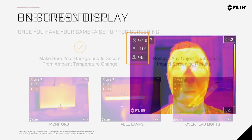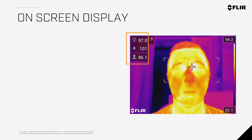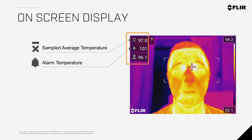Let's turn our attention over to the on-screen display. On the screen, you will see three temperature boxes displayed in the upper left-hand corner. The topmost box displays the average temperature. The middle box displays the set alert temperature, which can be adjusted in the screening mode setup page. And the bottom displays the current subject's skin temperature.